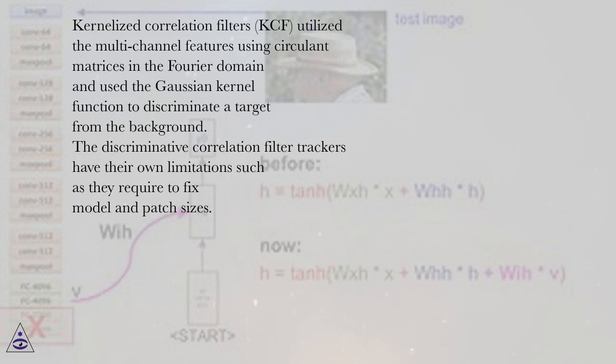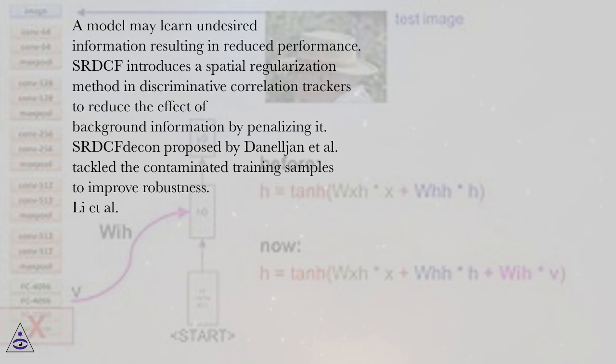Kernelized correlation filters KCF utilized the multi-channel features using circulant matrices in the Fourier domain and used the Gaussian kernel function to discriminate a target from the background. The discriminative correlation filter trackers have their own limitations such as they require to fix model and patch sizes. A model may learn undesired information resulting in reduced performance.